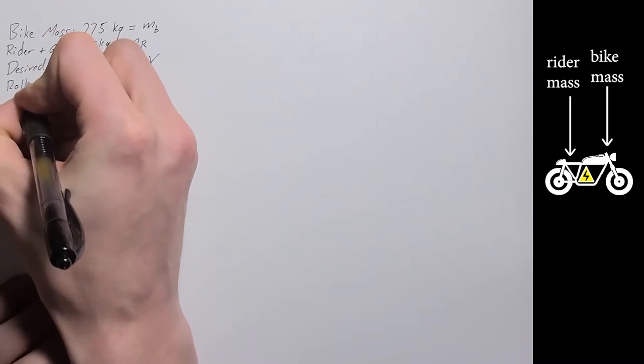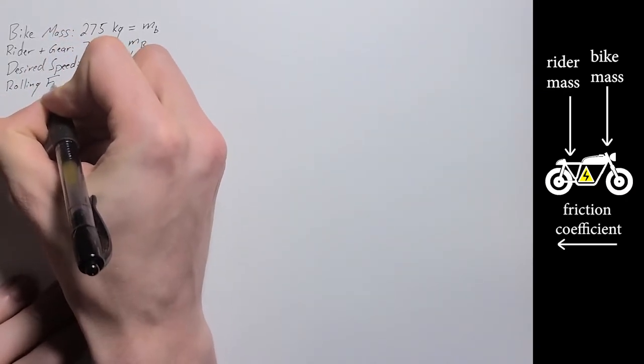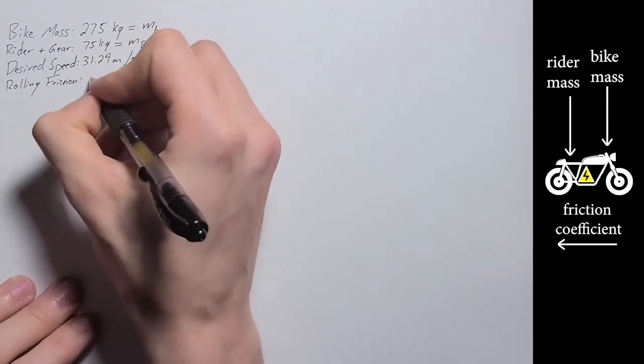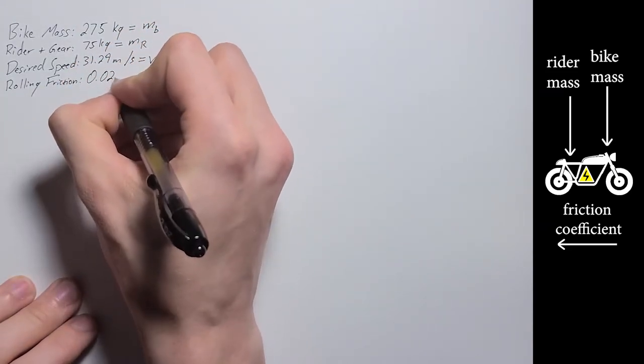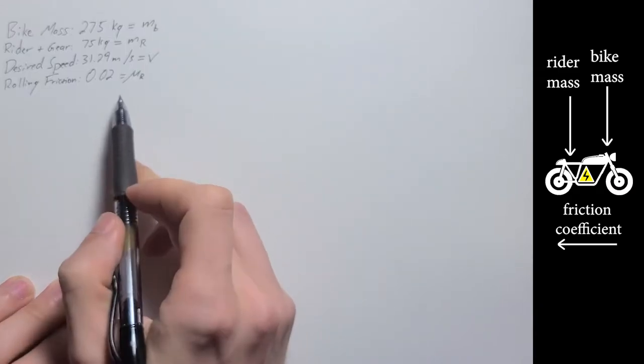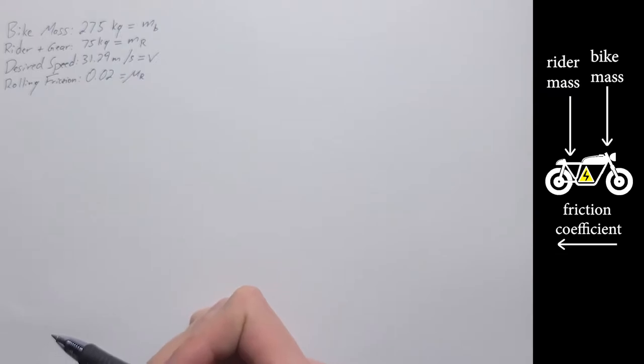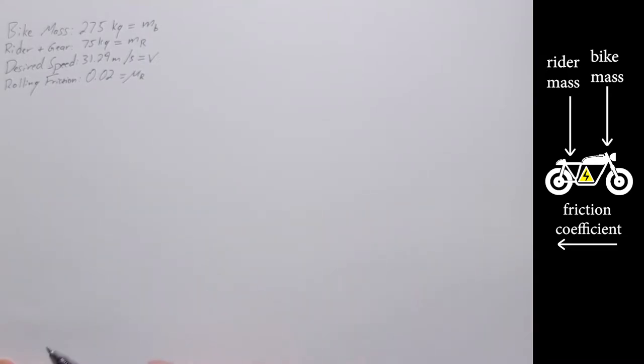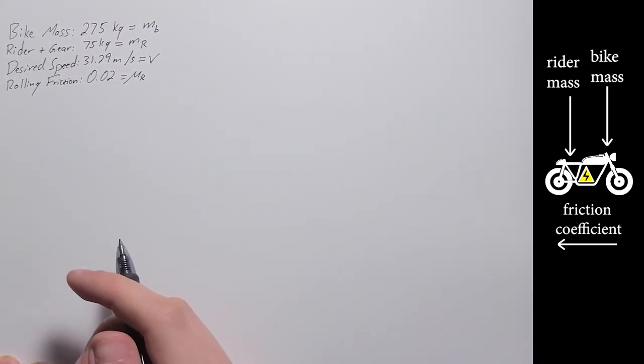So the coefficient of rolling friction, I'm estimating that around 0.02 for rolling friction coefficient. That's based off of just online estimates for rubber on concrete. So again, to be taken with a grain of salt, but we'll bake in some conservatism later on.